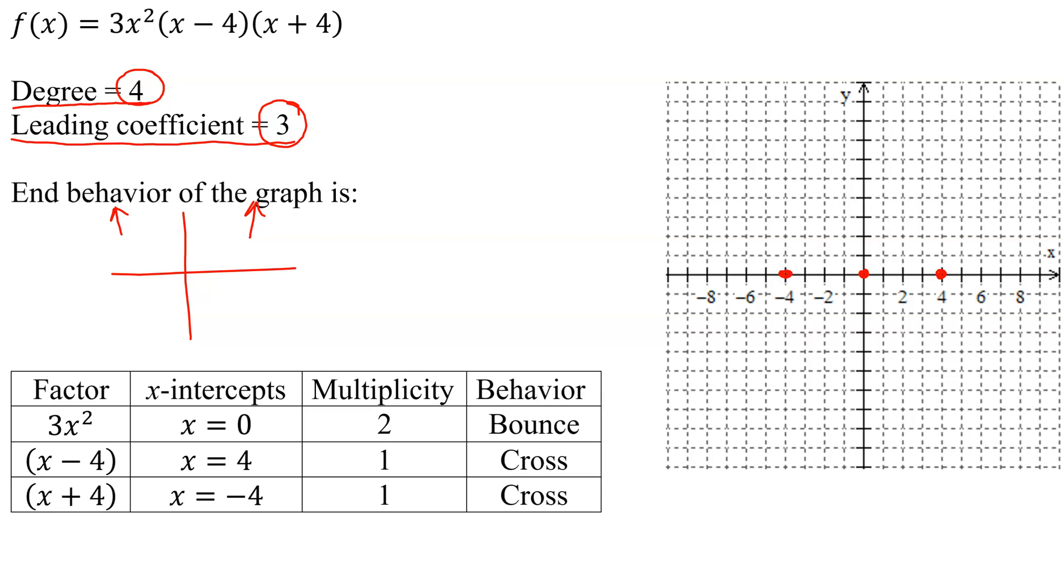So now I'm going to put my end behavior on. I know the graph is going to point up in this direction and in this direction. So I know my graph is going to come down here. And what's it going to do at negative 4? When x equals negative 4, it's going to cross. So I'm going to try and graph something that crosses.